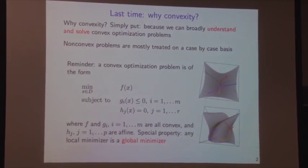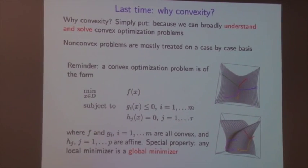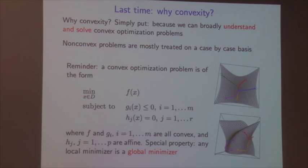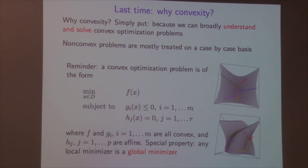Last time we talked about motivation for the course and ended with the idea that convexity is a very important property of an optimization problem. Simply put, we can broadly understand and solve convex optimization problems. That doesn't mean it's always efficient — especially for large-scale problems — but we can give recipes for how to solve them. Non-convex problems are mostly treated on a case-by-case basis.